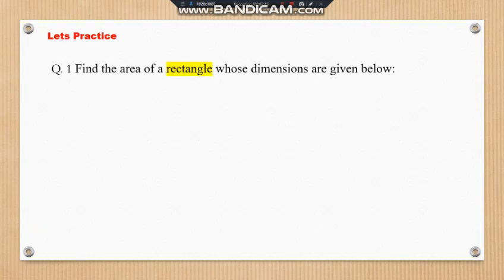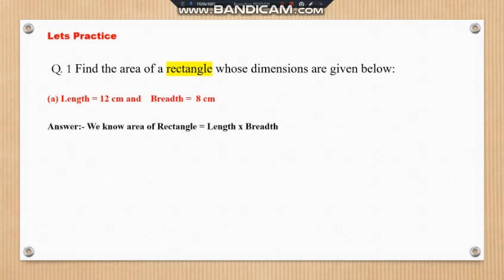Dimensions means a rectangle has two dimensions: length and breadth. Question number one: length is 12 cm and breadth is 8 cm. We know the formula of rectangle is length multiplied by breadth. Substituting the values, length = 12 and breadth = 8. After multiplying, the answer is 96. Therefore, the area of the rectangle is 96 square centimetres.